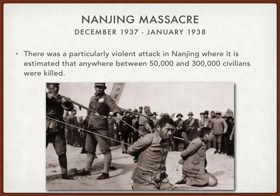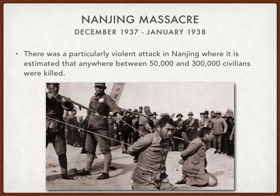Nanking was a particularly violent attack, known as the Nanking Massacre, which took place between December 1937 and January 1938. It was a six-week long attack on the city and it's estimated that anywhere between 50,000 and 300,000 civilians were killed. Numbers are not exactly certain and there are different accounts, but it would be safe to say upwards of 100,000 civilians were killed in these attacks.